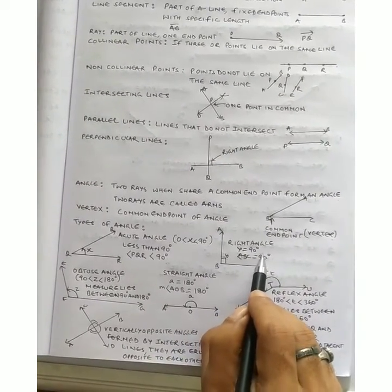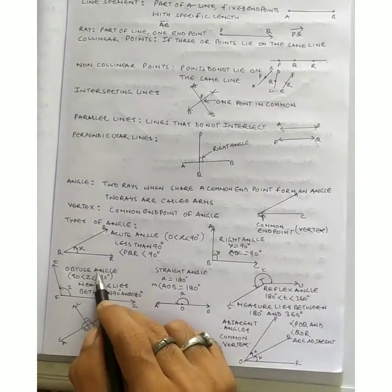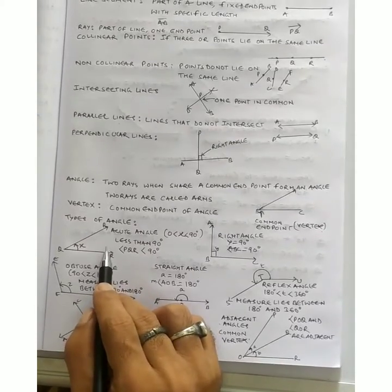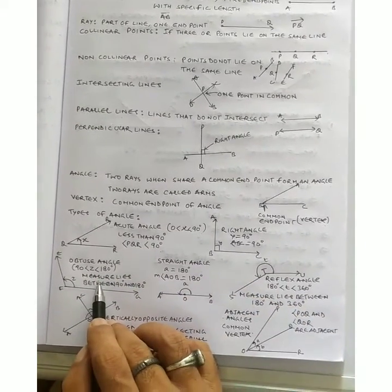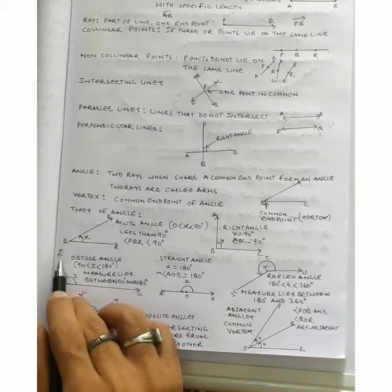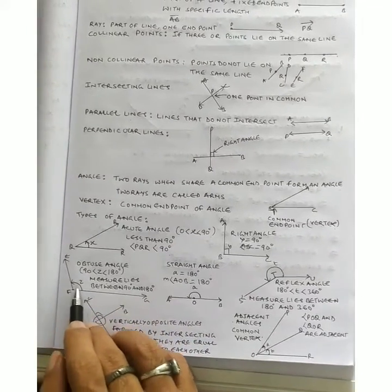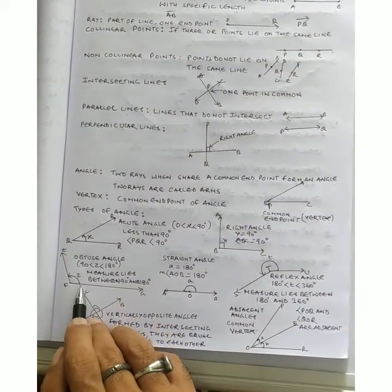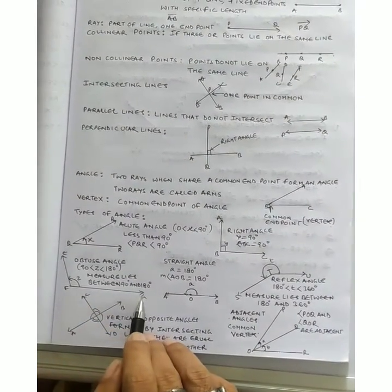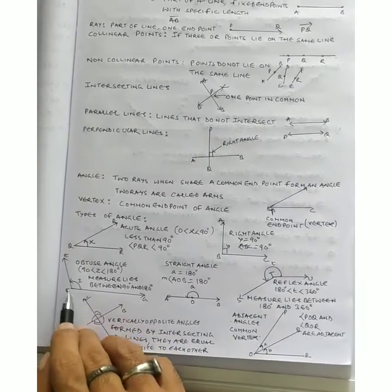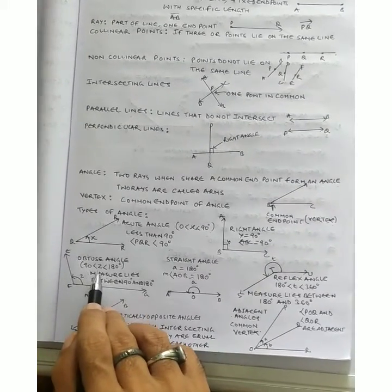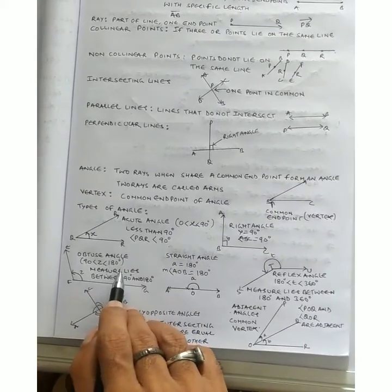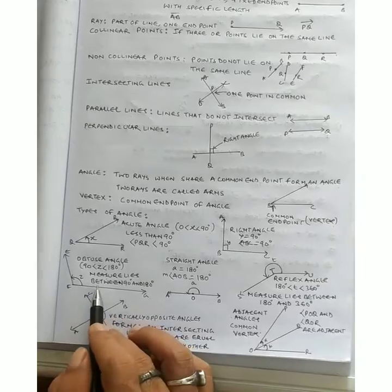Obtuse angle. It is greater than 90 degrees. Pehle humne dekha less than 90, equal to 90. Ab iska matlab ye greater than 90. Obtuse angles are those angles whose measure lies between 90 and 180 degrees. Suppose main isko z mark kar deta hun. EFG is an angle, and the measurement of this angle is z. Then z lies between 90 and 180. 90 less than z less than 180. It lies between 90 and 180.